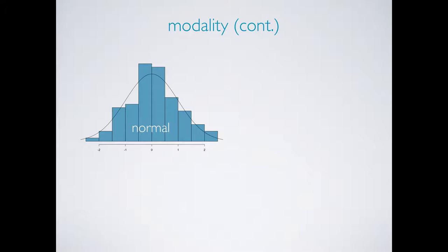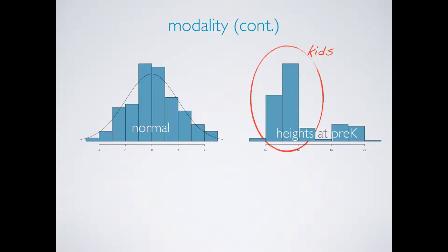A bimodal distribution might indicate that there are two distinct groups in your data. For example, here's a distribution of heights of individuals at a preschool. The first peak might be the kids, and the second the teachers.